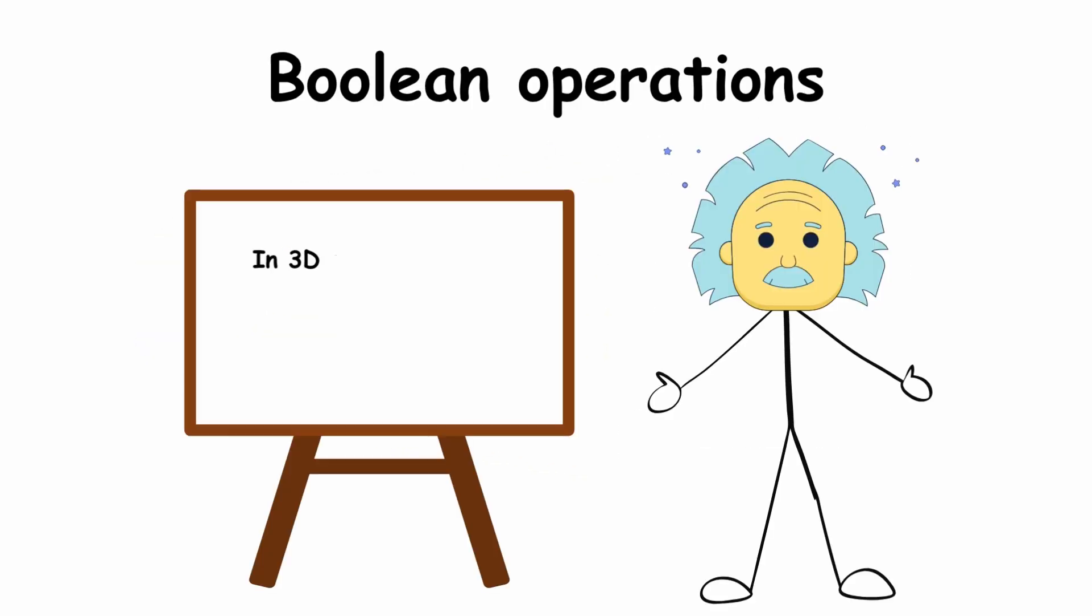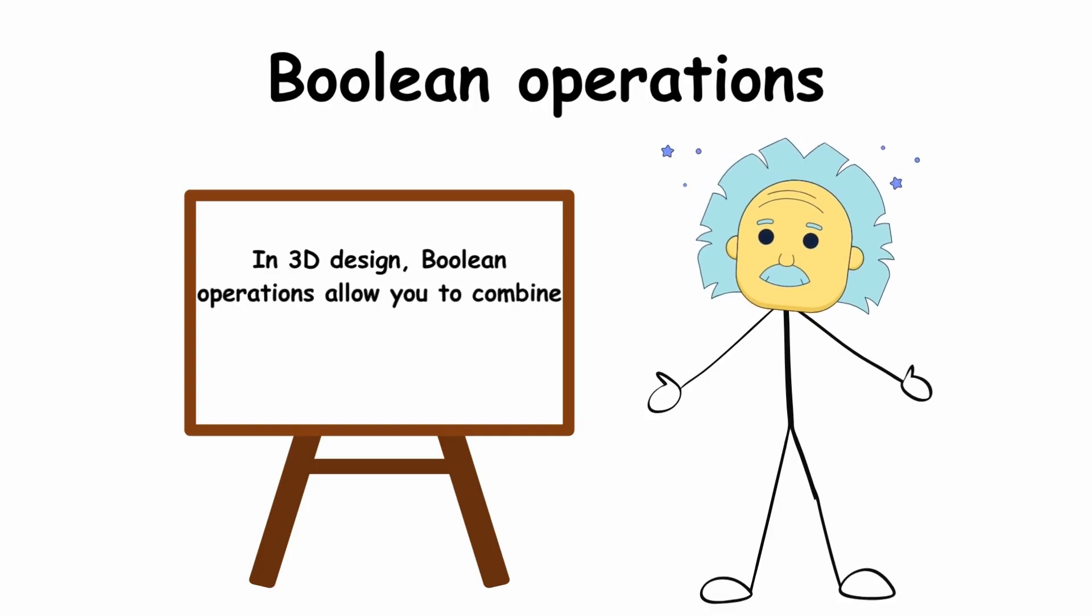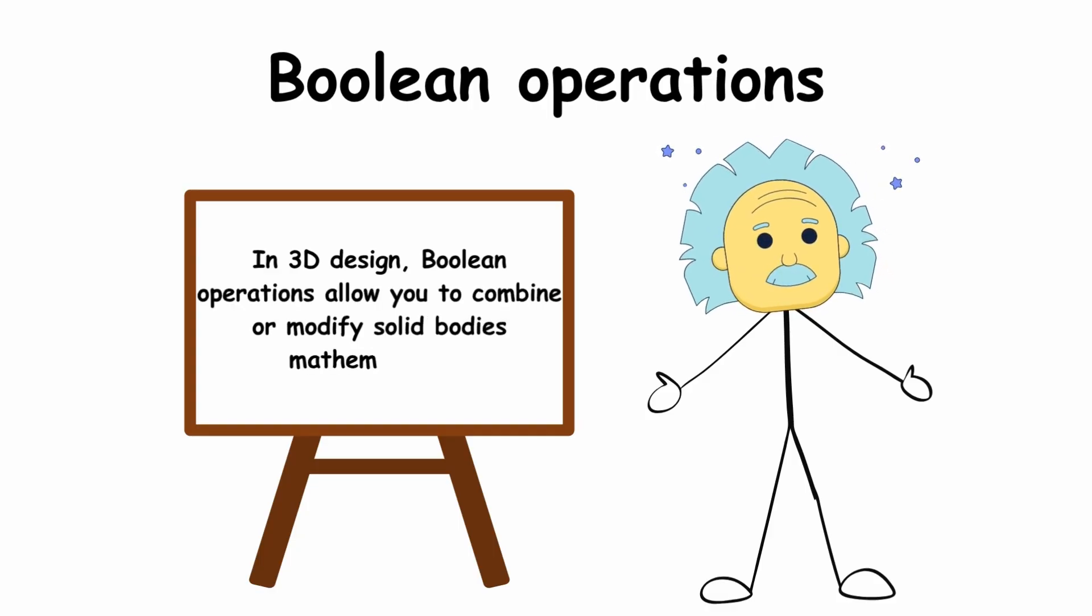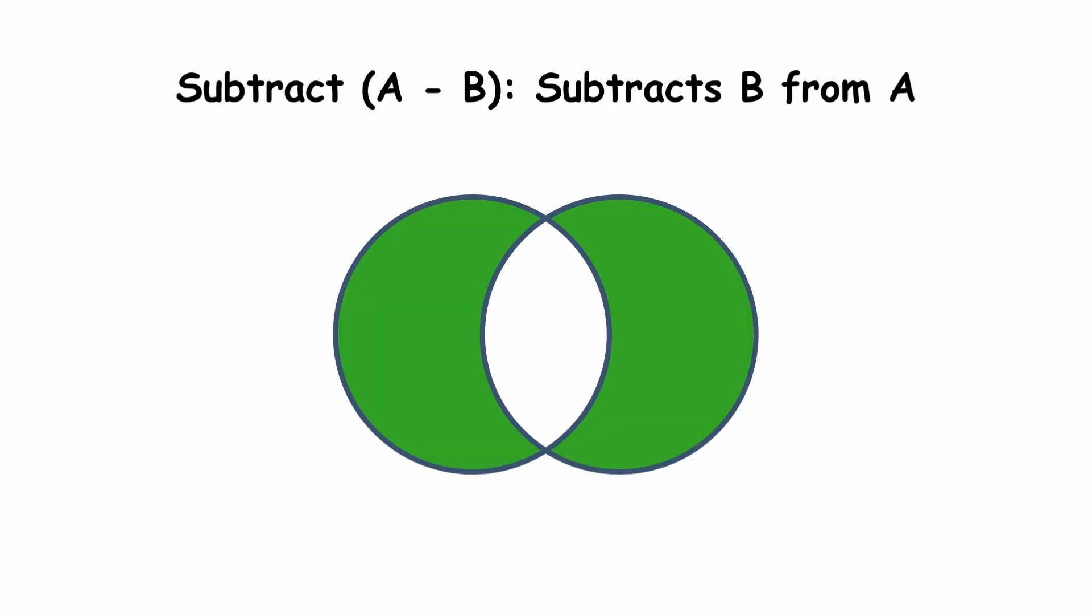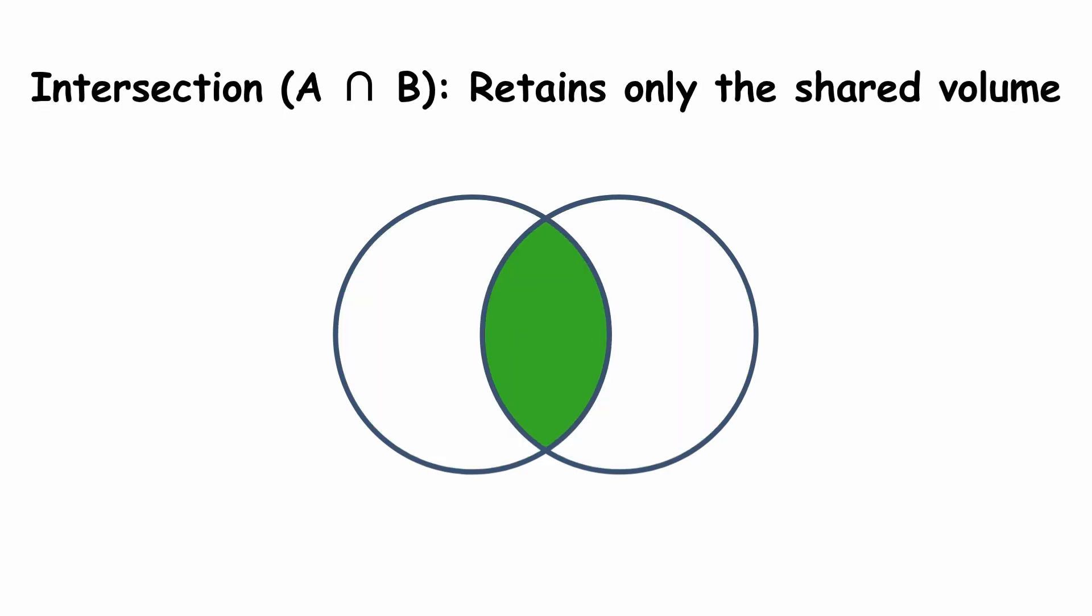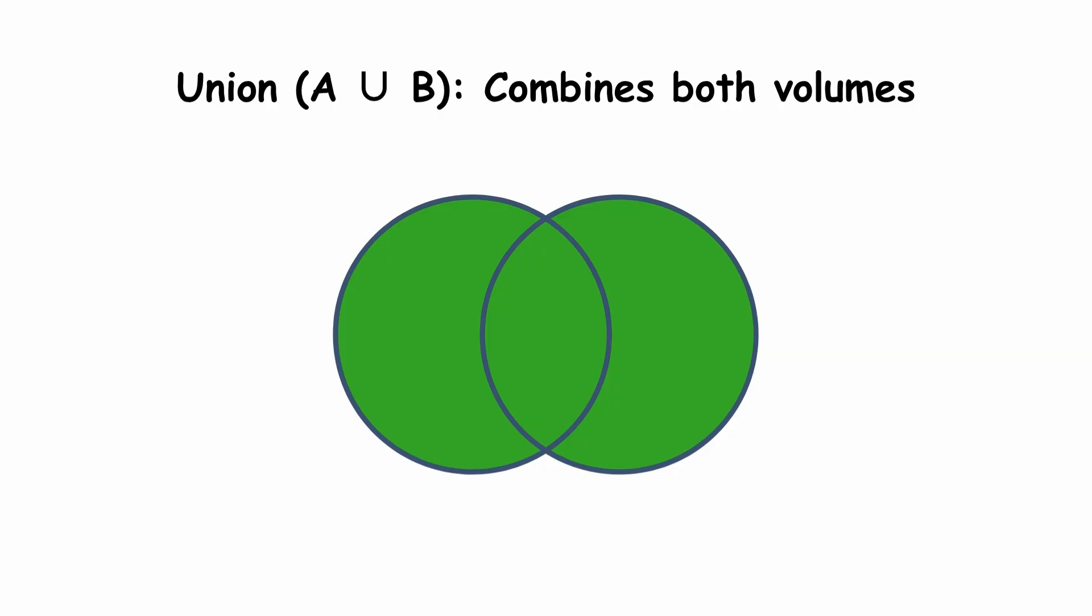In 3D design, boolean operations allow you to combine or modify solid bodies mathematically. These operations subtract, intersection, and union are based on set logic. Subtract subtracts b from a. Intersection retains only the shared volume. Union combines both volumes.